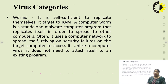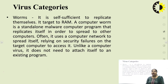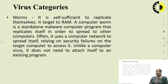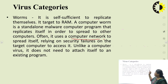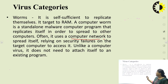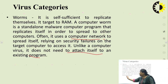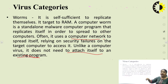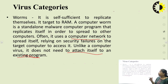Worms are self-sufficient and replicate themselves. A computer worm is a standalone malware program that replicates itself in order to spread to other computers. It uses a computer network to spread itself, relying on security failures on the target computer to access it. Unlike a computer virus, it does not need to attach itself to an existing program — it is an independent program that can work independently and replicate itself to damage the entire system or network.